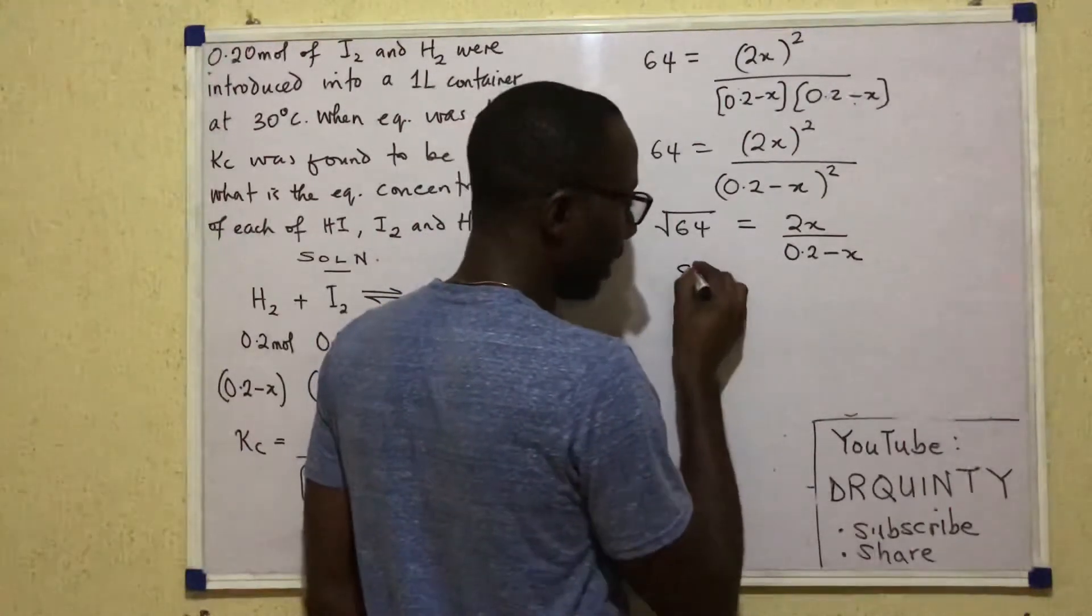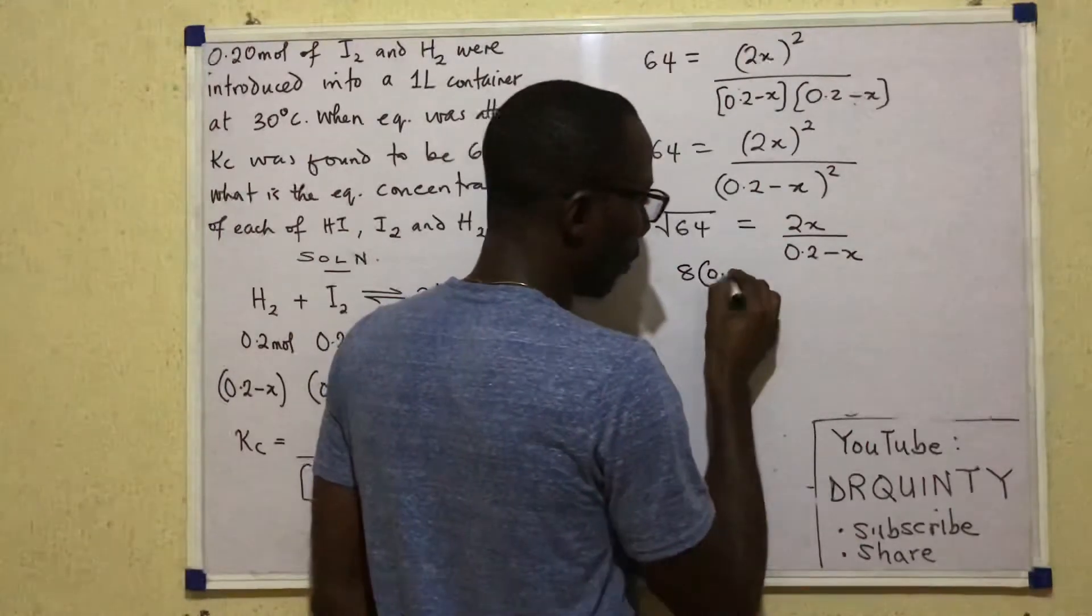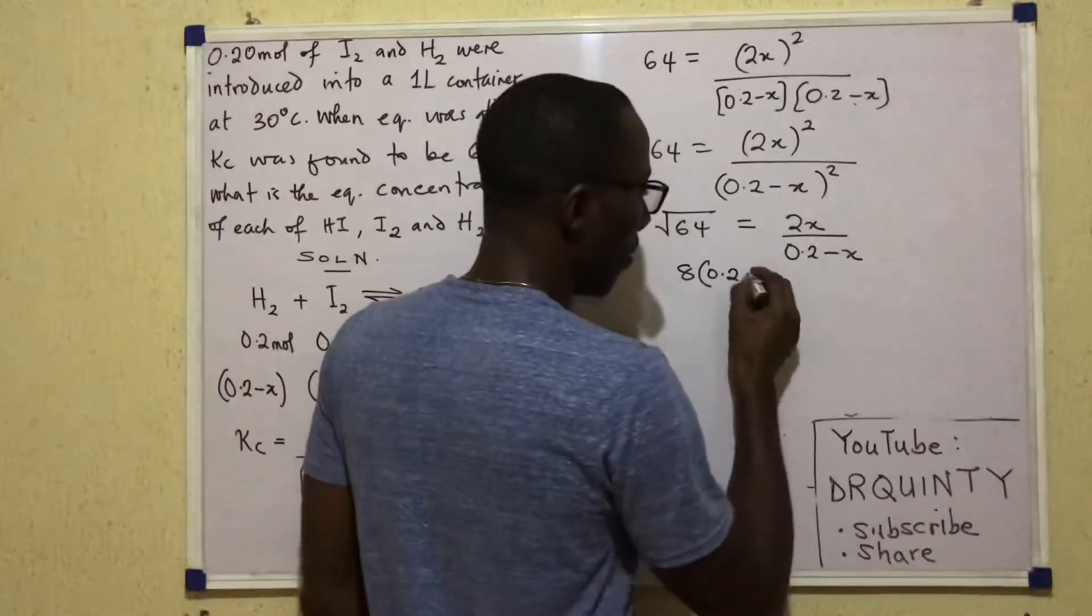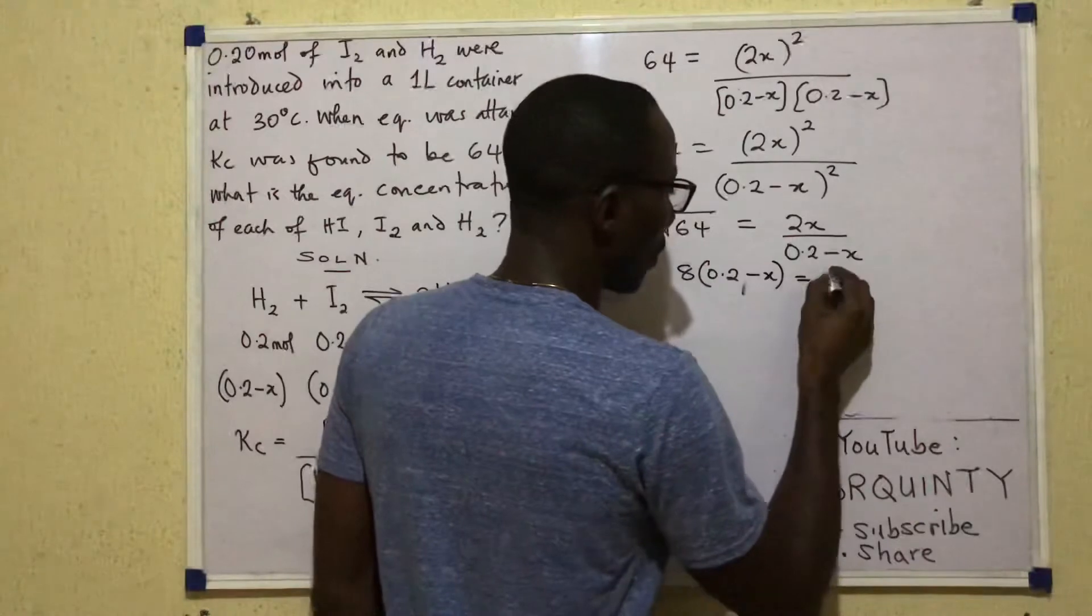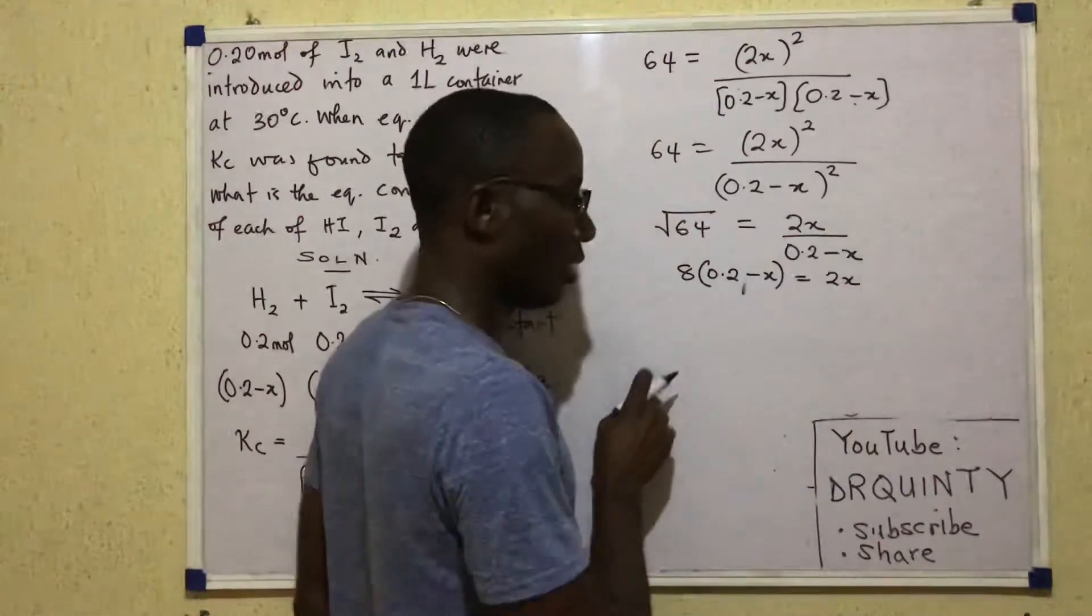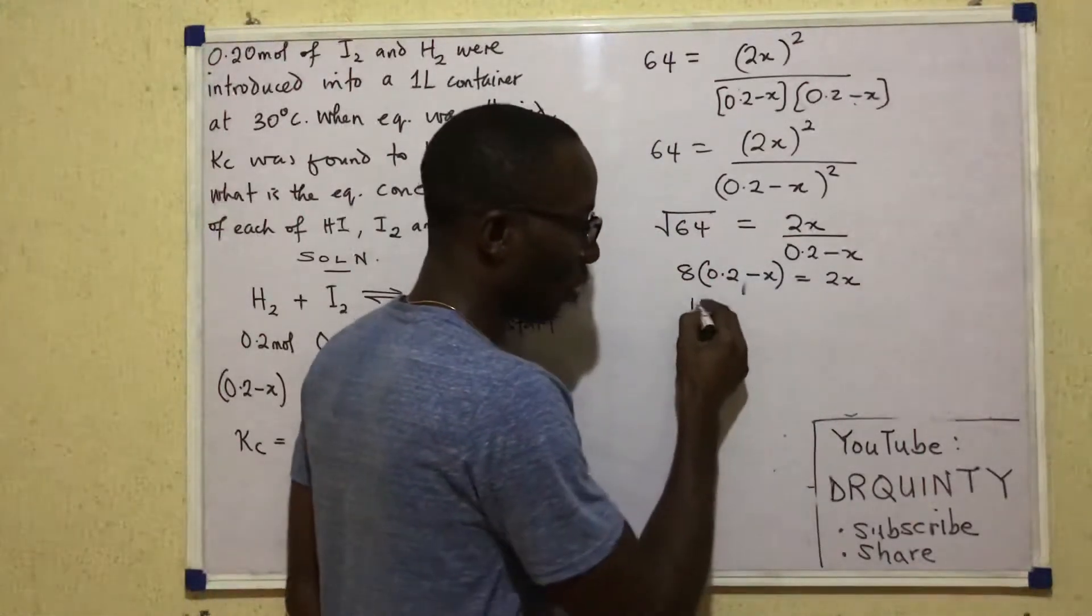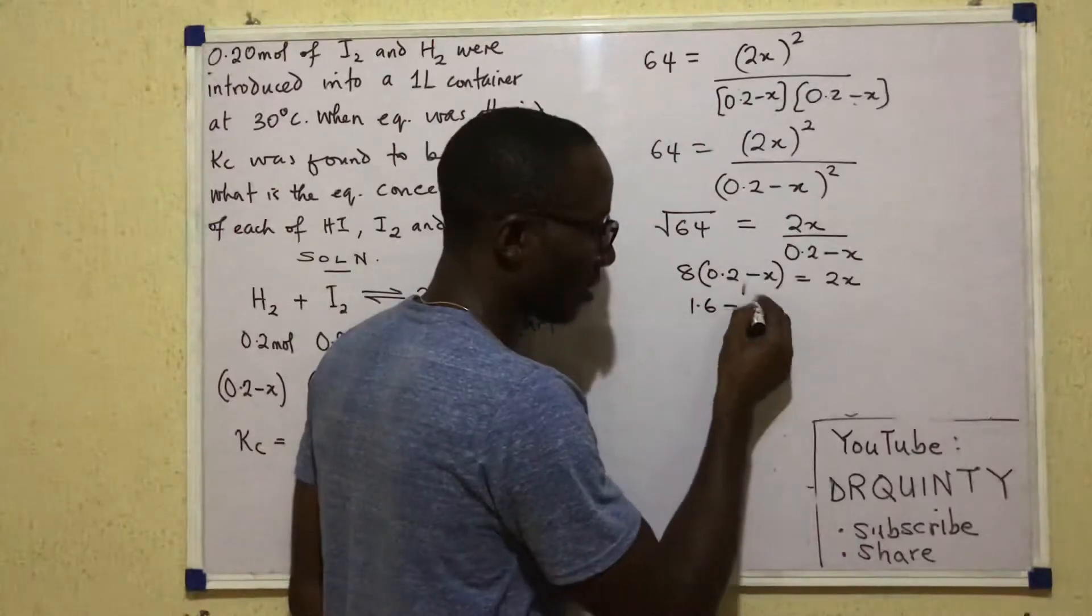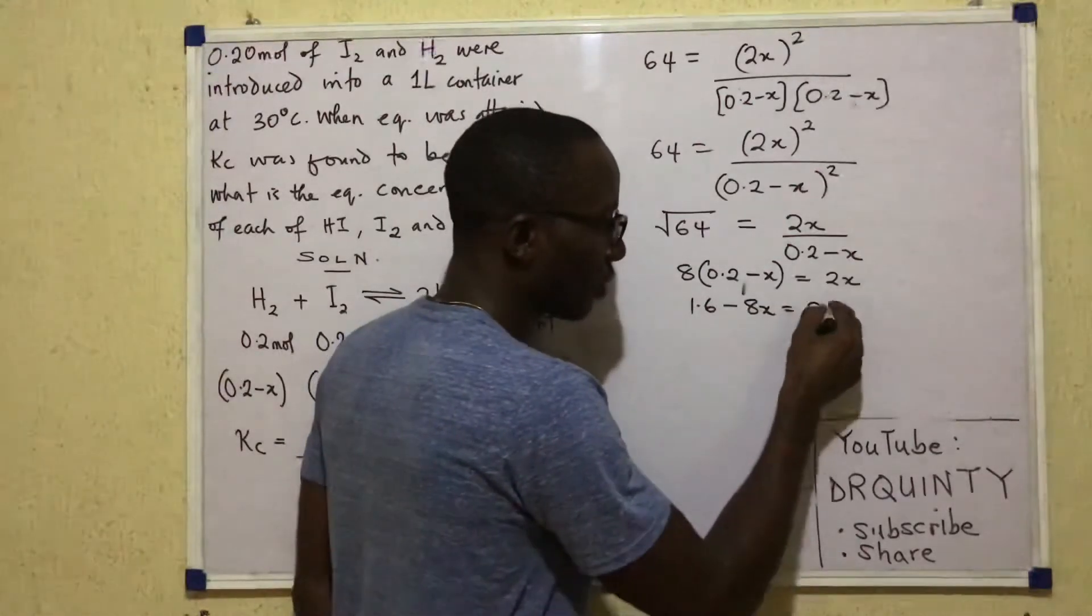So this becomes 8 into 0.2 minus X equals 2X. 8 into 0.2 is 1.6 minus 8X equals 2X.